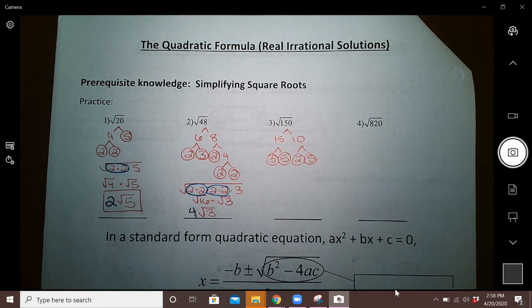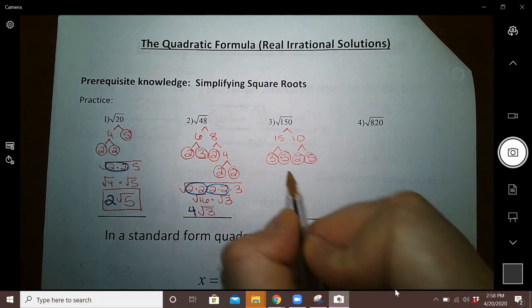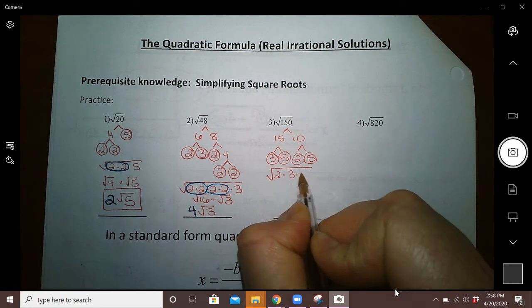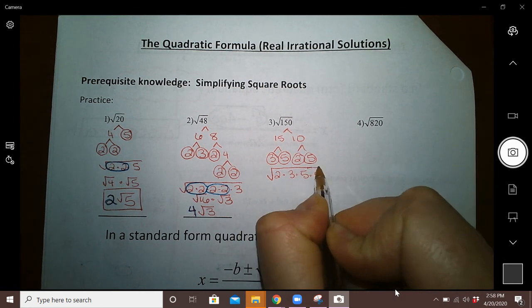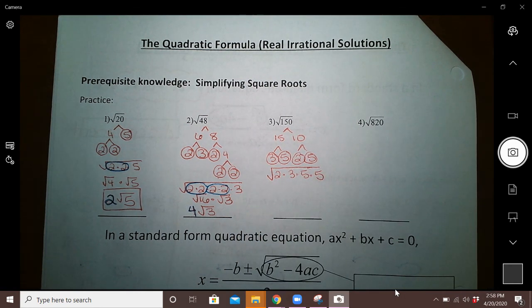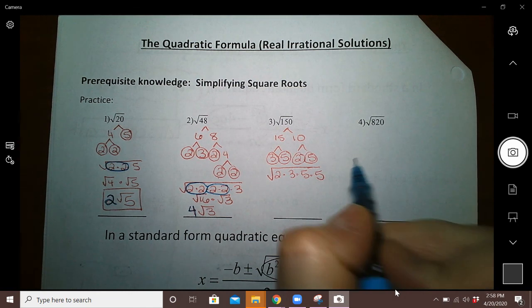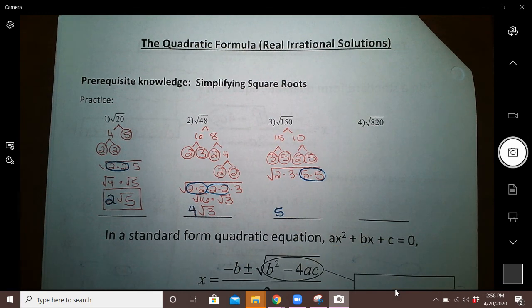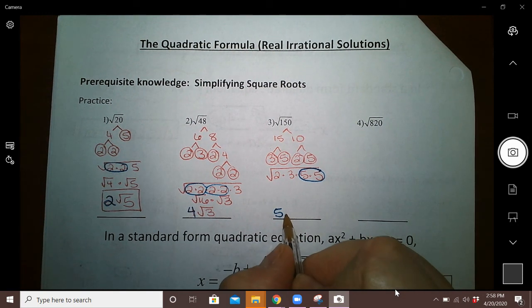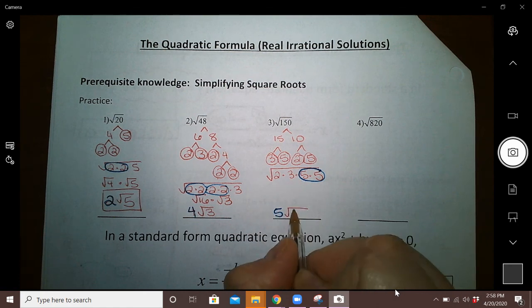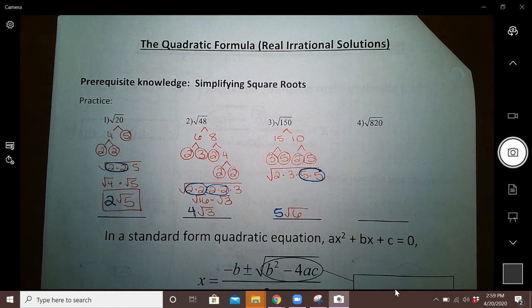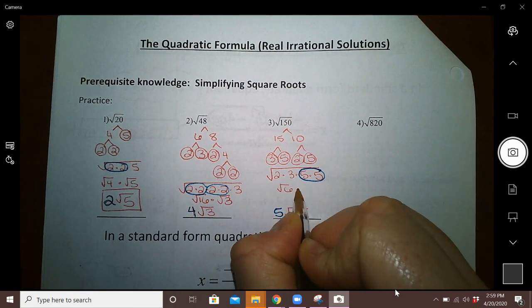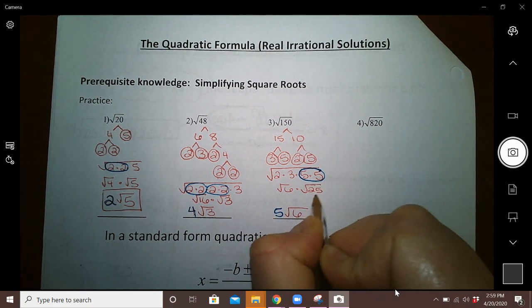15 is 3 times 5; both of those are prime. And 10 is 2 times 5, and both of those are prime. So the square root of 150 has 1 two, 1 three, and 2 fives. Well, here's that partnership we've been talking about: there's 2 fives, so the 5 can go out front, and anything that does not have a partner stays inside. 2 times 3 is 6.